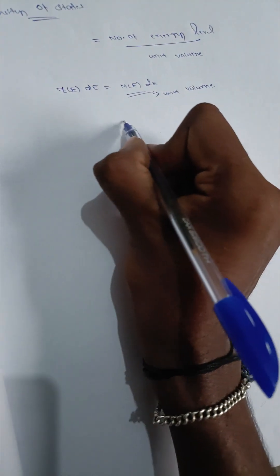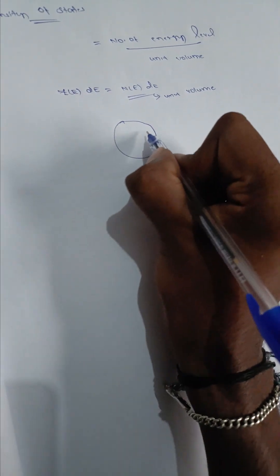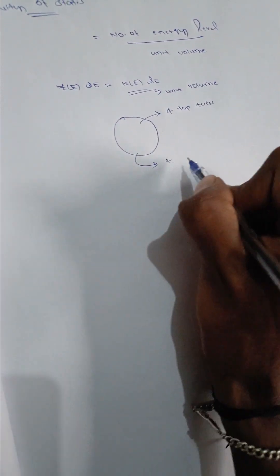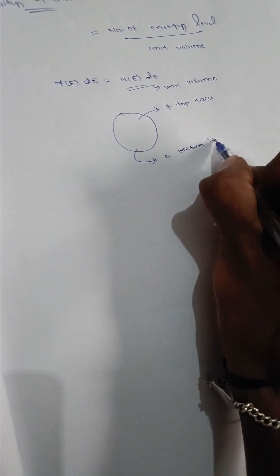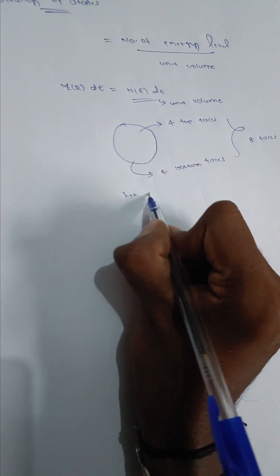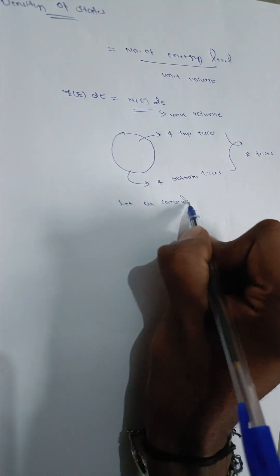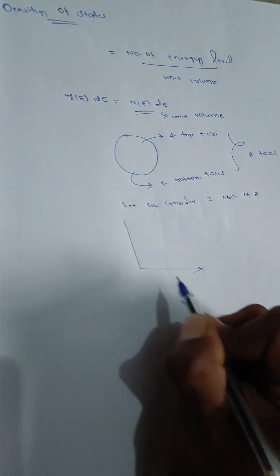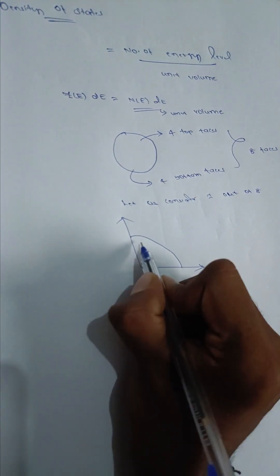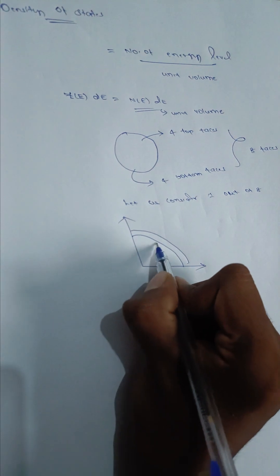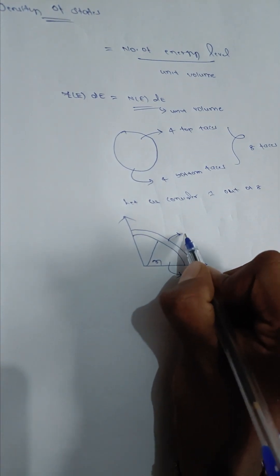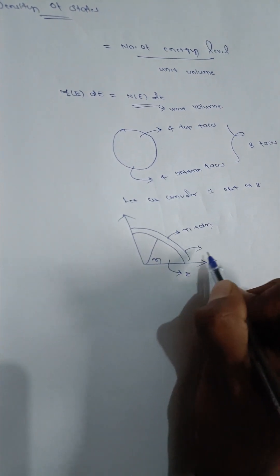As we know, atoms are in a sphere structure. The sphere consists of four top faces and four bottom spaces — total eight faces. Let us consider one out of eight, with its inner radius as n and energy as E, and its outer radius as n plus dn and energy as E plus dE.